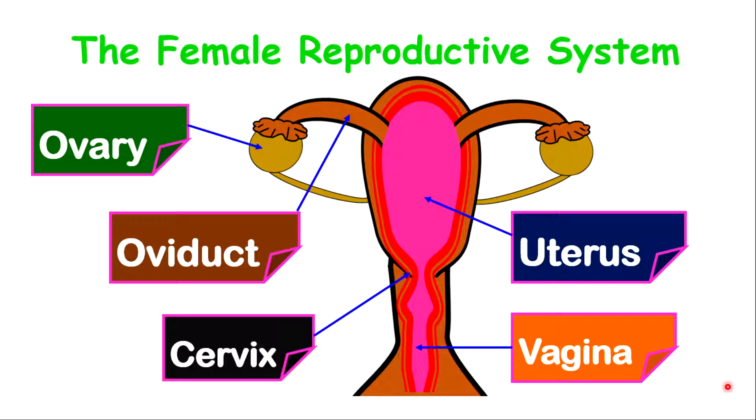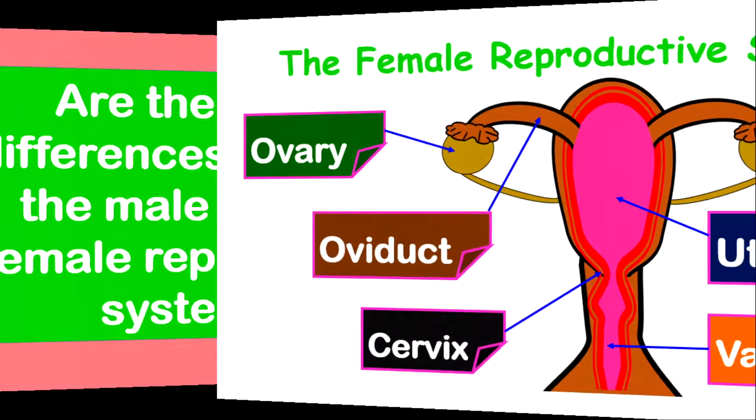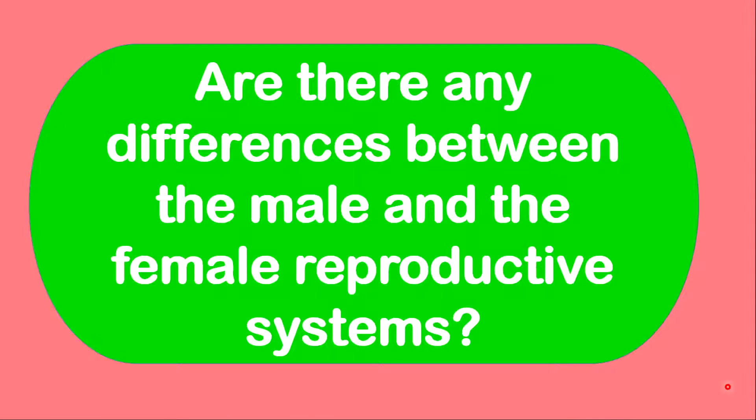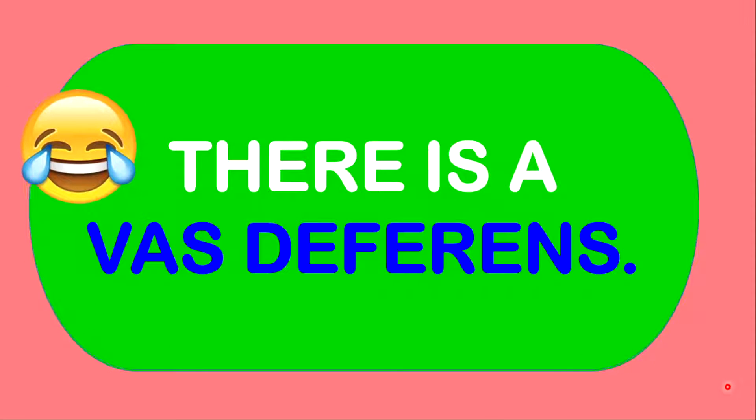But before I get into the details of this lesson, I want to ask a very serious question. Are there any differences between the male and the female reproductive systems? Think about it. The answer is yes. Do you know any of these differences? Well, there is a vast difference. If you didn't get the stroke, then you need to visit the male reproductive system attached at the end screen.